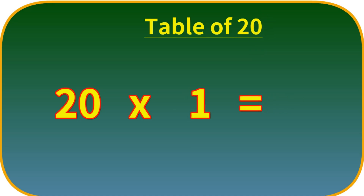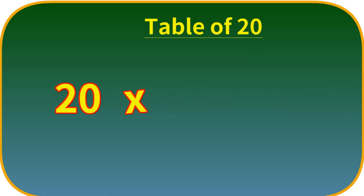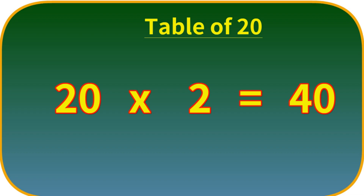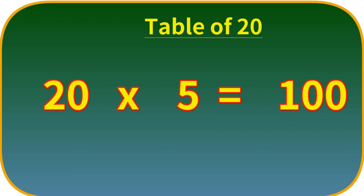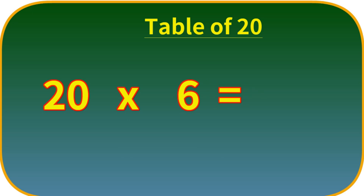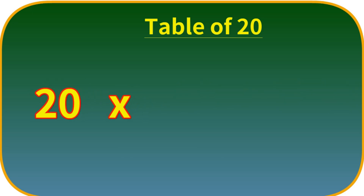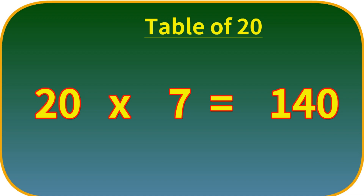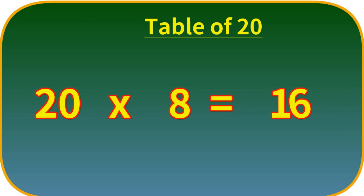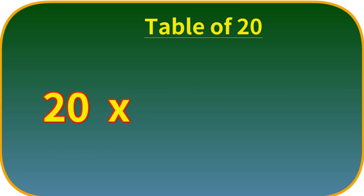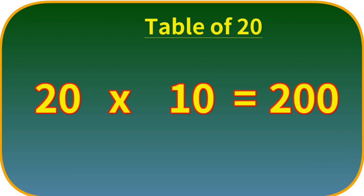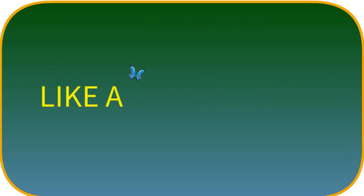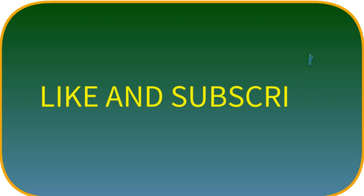Table of 20. 20 ones are 20. 20 twos are 40. 20 threes are 60. 20 fours are 80. 20 fives are 100. 20 sixes are 120. 20 sevens are 140. 20 eights are 160. 20 nines are 180. 20 tens are 200. Please children, like and subscribe to my channel. Thank you.